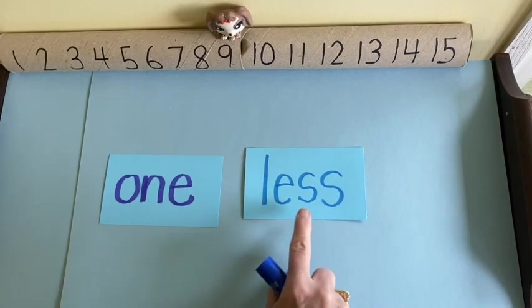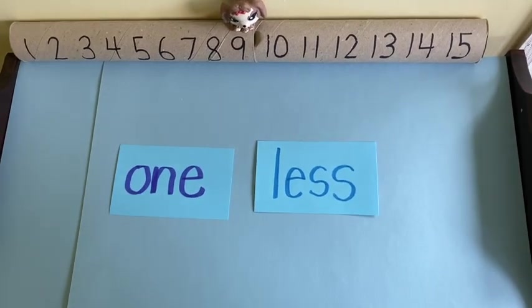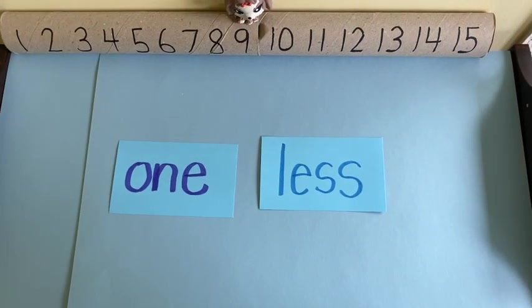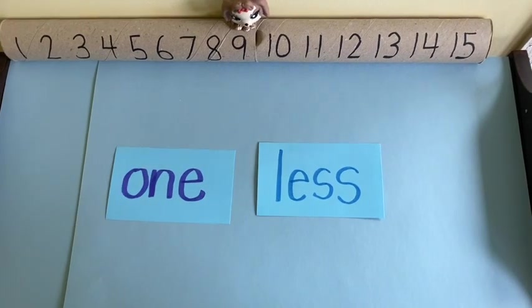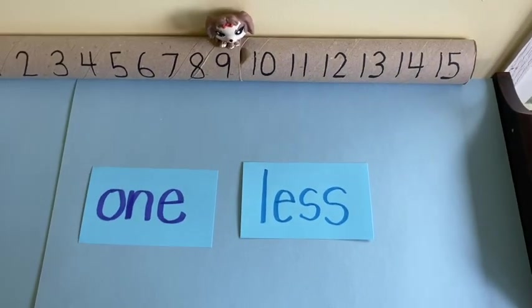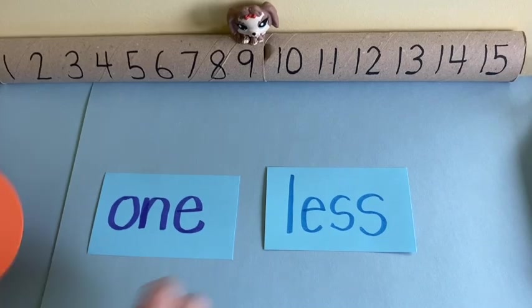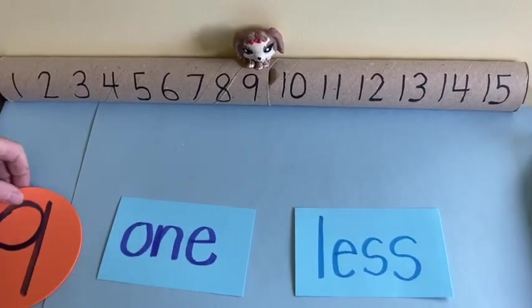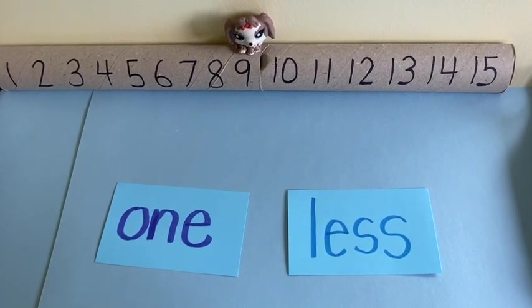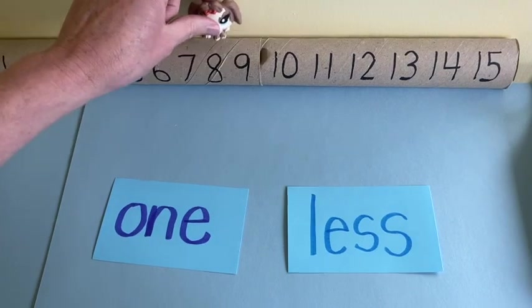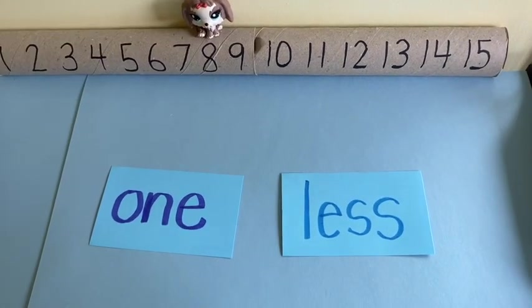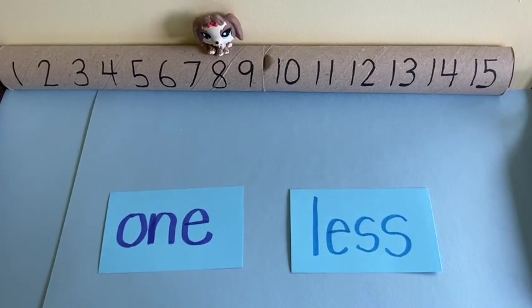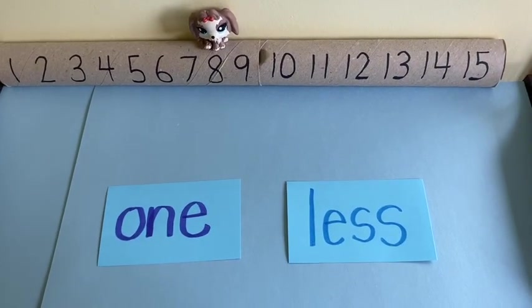So we talked about how the word less means to take away. So I want you to see that number line. Remember, we talked about it yesterday. I made it from those two paper towel holders. And there's a little dog, Littlest Pet Shop. She's sitting on number nine. That will be our focus number today again. So she's on number nine. And right now I would like you to show me what would be one less. Think quietly to yourself. It would be jump back eight.